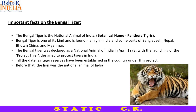Till date, 27 tiger reserves have been established under Project Tiger. Before April 1973, the lion was the national animal of India. The tiger symbolizes the richness of Indian wildlife. There are approximately 2,500 tigers in the country and statistics are increasing due to praiseworthy efforts of the Government of India.